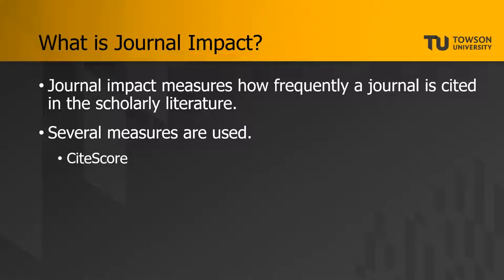The first metric is Cite Score, which you can find with Scopus. Cite Score looks at the average number of citations received by a journal divided by the number of documents indexed on Scopus during a three-year time frame.